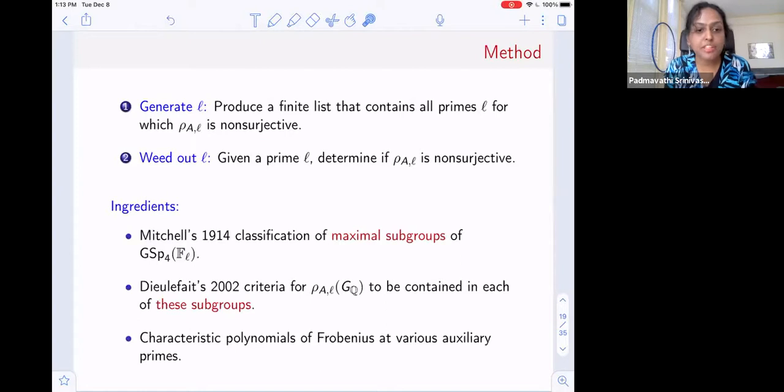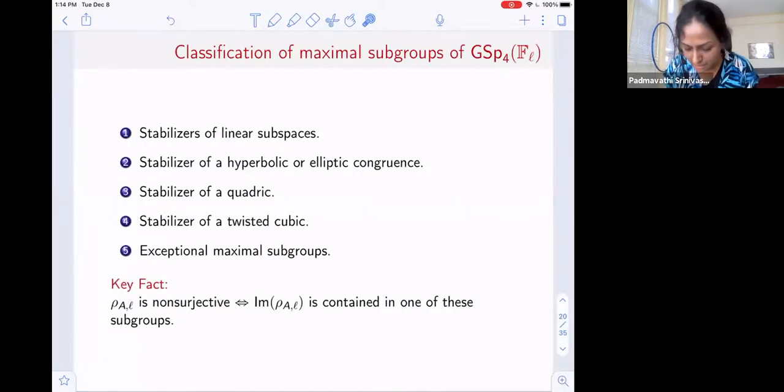There are three main ingredients that go into this proof. The first is a very classical ingredient. It goes back to the classification of maximal subgroups of GSp4(F_L). This goes back to Mitchell from 1914. Then in 2002, Dieulefait came up with some criterion for the Galois image to be contained in each of these subgroups. If the Galois image is contained in one of these maximal subgroups, there are restrictions on what the characteristic polynomials of Frobenius, what the matrices for Frobenius elements need to look like. So he did a careful analysis of what it means for the Galois image to be contained in each of these maximal subgroups. The main thing is to study the profiles of characteristic polynomials of Frobenius elements at various primes. So these are the three main ingredients.